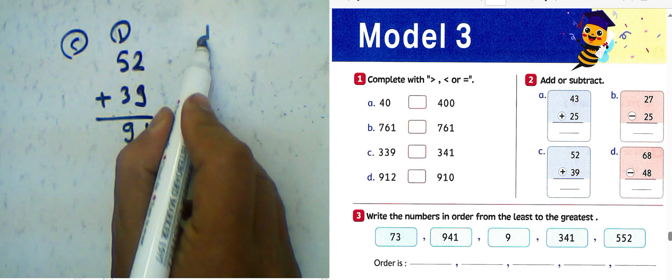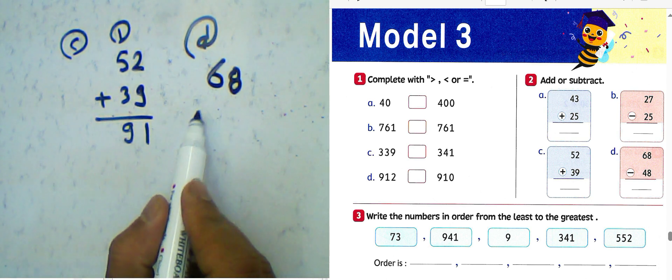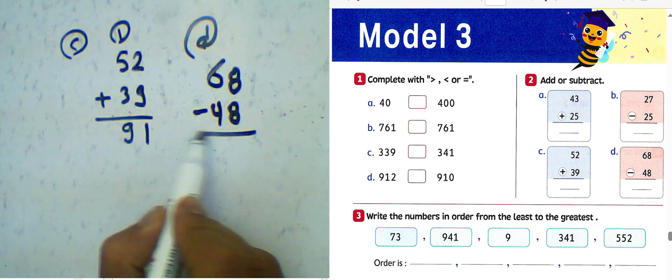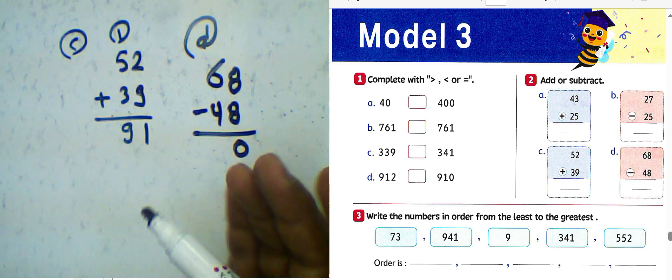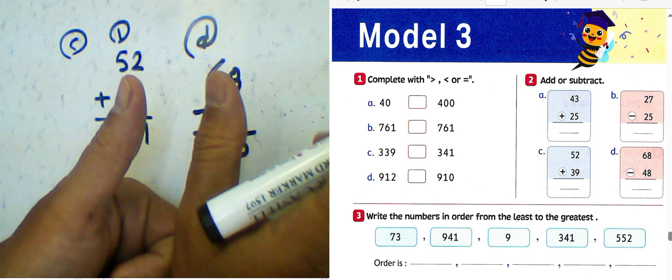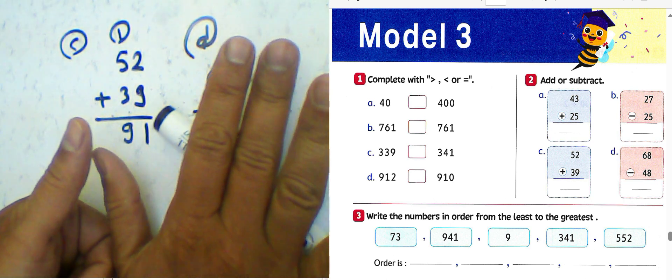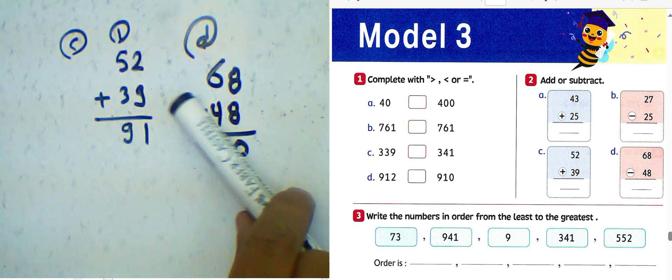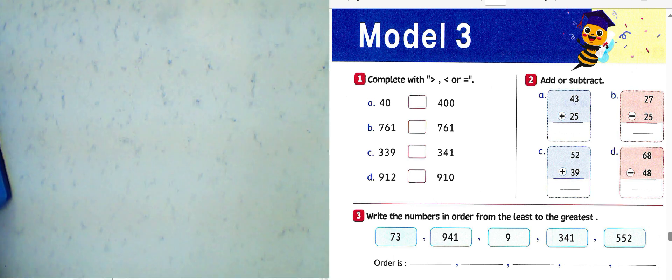Letter D: We have 68 subtract by 48. 8 minus 8 will be 0, and 6 minus 4, cancel from 6 here, count fingers 6. Count 4, the result will be 2. So the result will be 20. The difference between them, it will be 20.